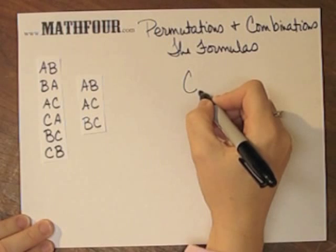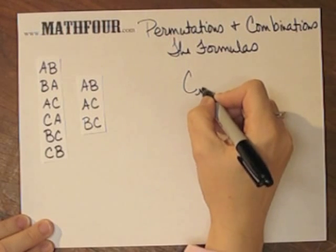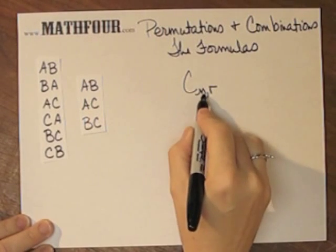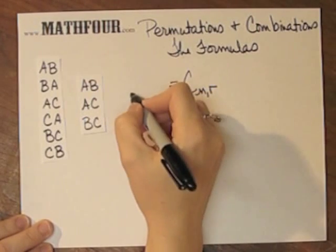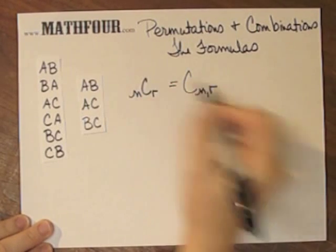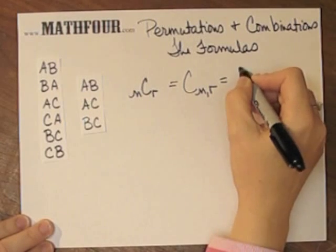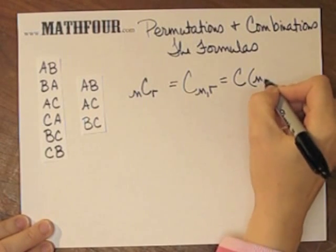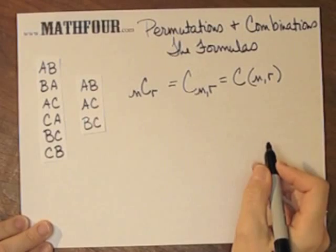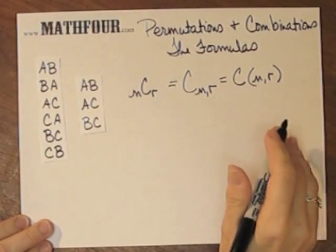There's combination of n take r, we can also write combination of n take r like this, and then some places write like this. So all these three mean the same thing.